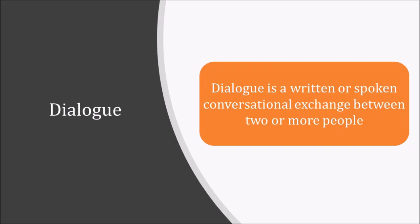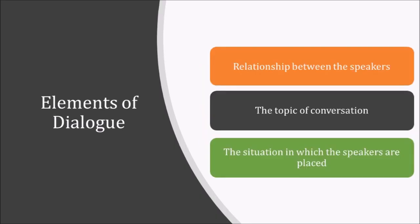We can conclude by saying that in a dialogue, it is affected by three main elements. First, the relationship between the speakers — as mentioned earlier, it may be two friends, colleagues, siblings, etc.